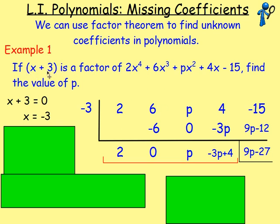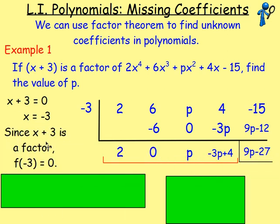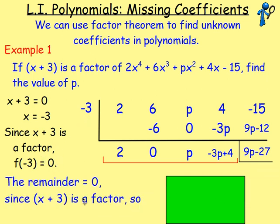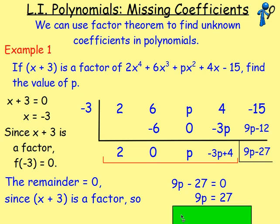Now remember, because x plus 3 is a factor, when we divide this polynomial through by x plus 3, we expect to get 0 here. Which means that if we sub in negative 3, we will get 0 out. So the remainder is 0 — since x plus 3 is a factor, 9p take away 27 equals 0. In other words, 9p is 27, and if you divide both sides by 9, p equals 3. So that is example 1.